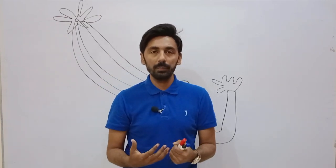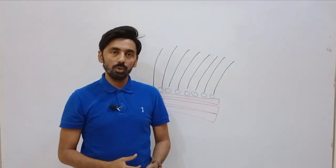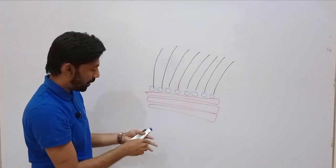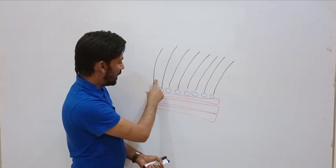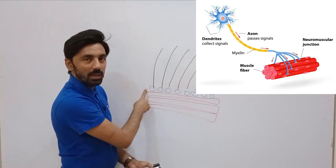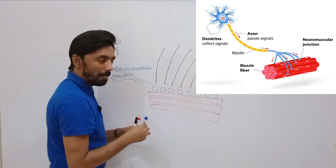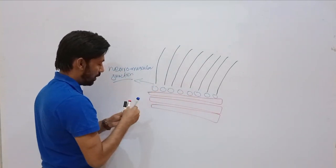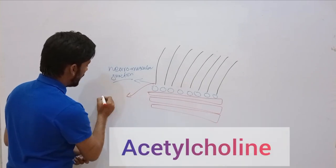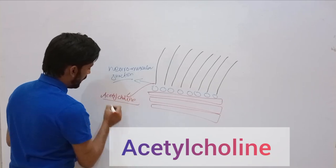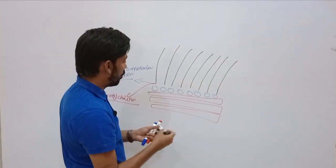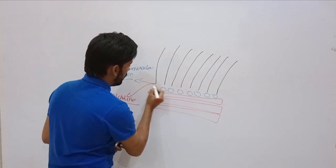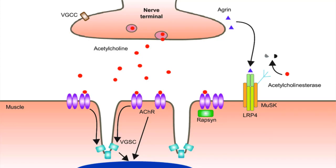Now we will learn how muscles contract in the body. These are motor neurons coming from the central nervous system and these are the muscle fibers. The specific point where motor neurons meet with the muscle fiber is called the neuromuscular junction. When an action potential comes from the central nervous system towards the muscle fibers, a specialized neurotransmitter called acetylcholine is released at the neuromuscular junction.